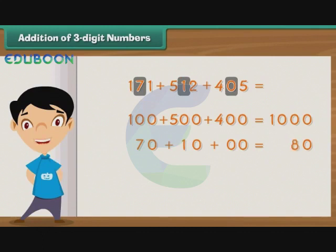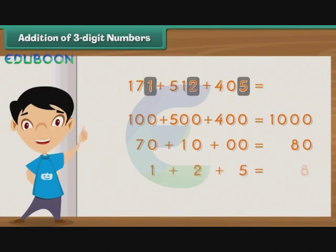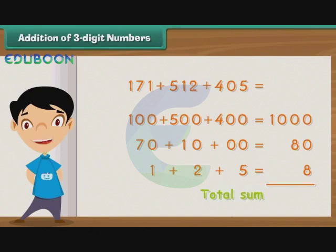Finally, we add the digits at the ones place, that is 1, 2, and 5, to get 8. Now we need to add 1000, 80, and 8 to get the sum of 171, 512, and 405. The result of the addition is 1088.